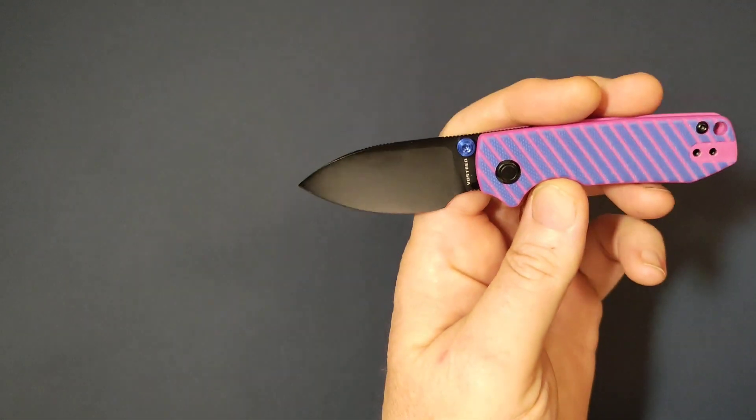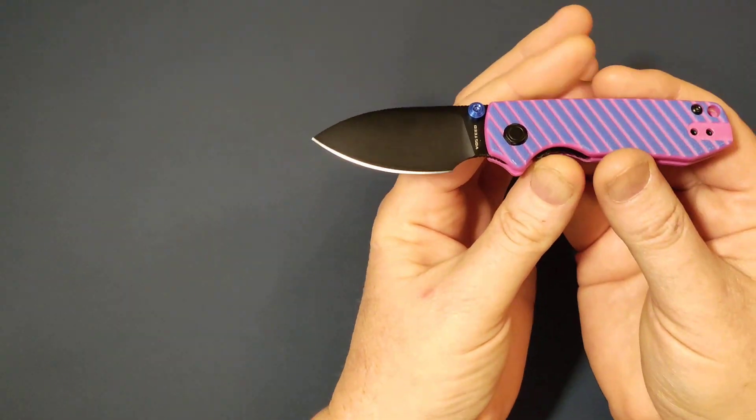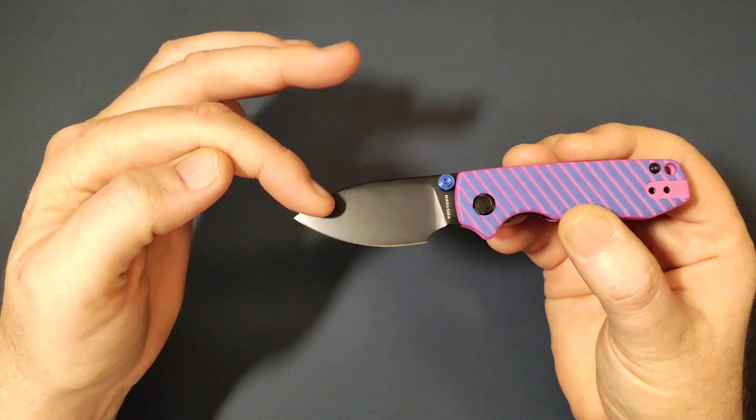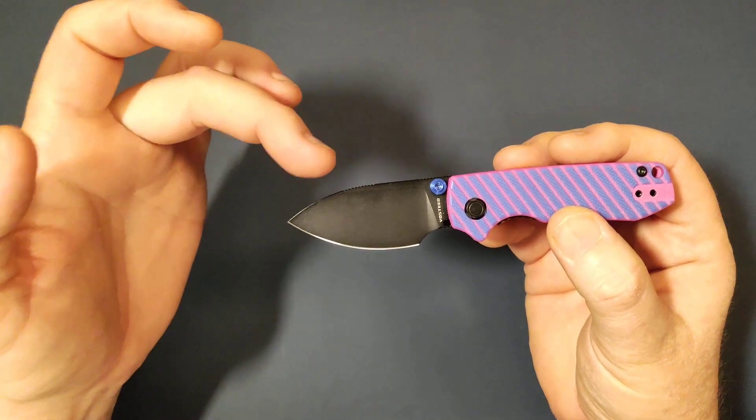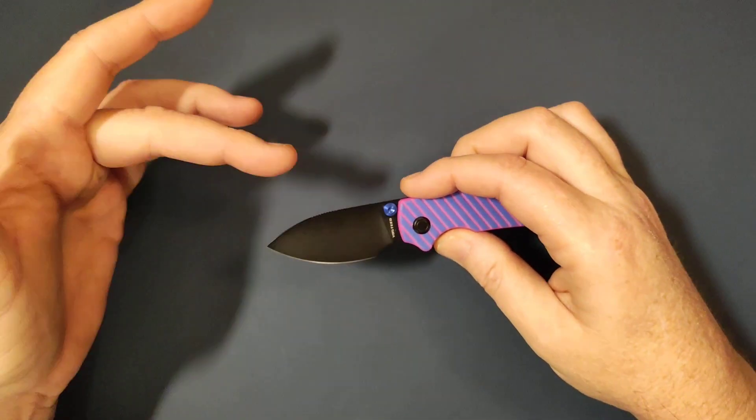It does have a flat grind on the blade, nice drop point blade as you can see there. Now this one is the black stone wash so they will have it in the black stone wash but they will also have it in their satin finish as well.